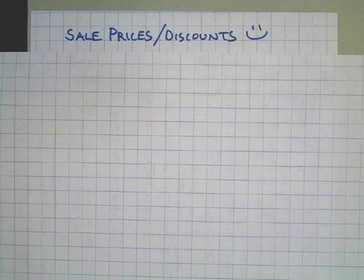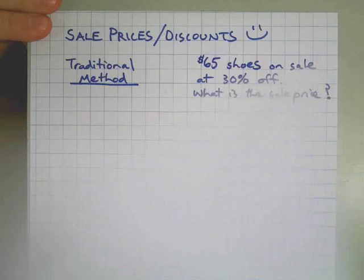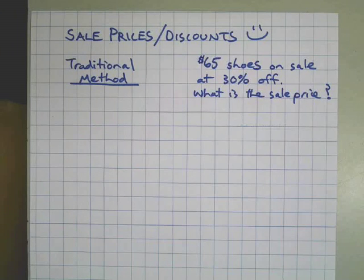This time we're going to talk about sale prices and discounts and how to calculate them in hopefully a way that's easy for you to understand. Here we go: a $65 pair of shoes is on sale 30% off, what is the sale price?